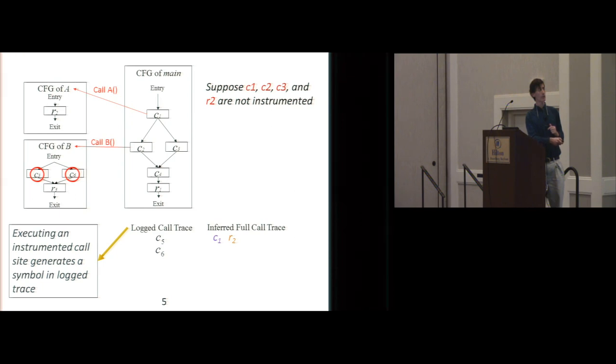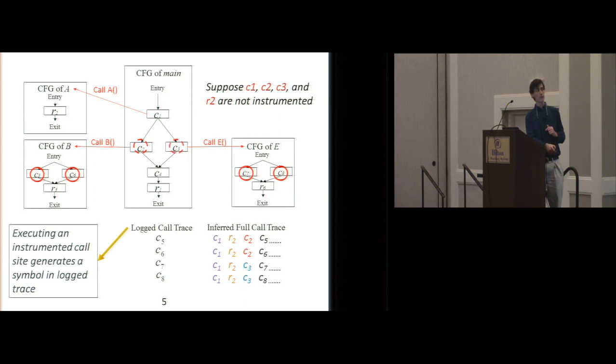So we want the inferred call trace by the time we've gotten back here to have both C1 and R2. Then we'll follow one of these branches. Suppose we go down here and call B, and now we get to, let's suppose that we get to a place where we actually are having instrumentation code. If we go down this branch, we'll get the C5 showing up in the log call trace. If we go down this branch, we'll get the C6. And by the time, what we want is a method that will take this log call trace and figure out that it has to put, in the first case, C1, R2, and C2 back into the trace before C5. And in the case of the second one, it will put back C1, R2, C2.